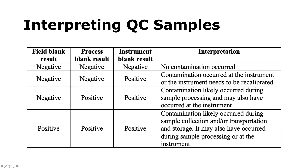All blanks should come out negative if there are no issues in the laboratory or the field. If all three blanks are negative, no contamination has occurred. If the field blank and process blank are negative but the instrument blank is positive, contamination likely occurred at the instrument or the instrument needs recalibration. If the field blank is negative but the process blank and instrument blank are positive, contamination likely occurred during sample processing and possibly at the instrument. If all three are positive, we don't know exactly where contamination occurred, but it probably happened out in the field.